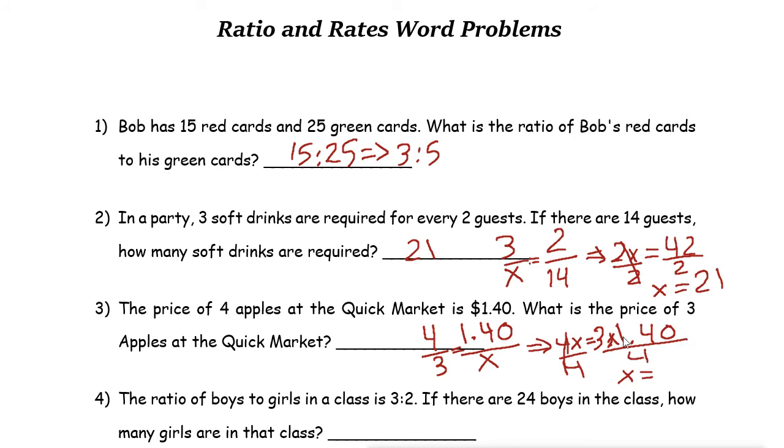And if you divide it, so it is just 4.20 divided by 4, you get 1.05. 1.05 means $1.05 for three apples.